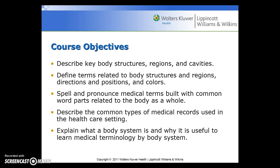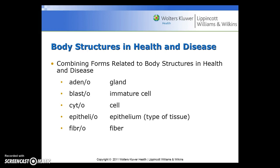This chapter's course objectives are to describe the key body structures, its regions and cavities; to define terms related to body structures, regions, directions, positions, and colors in medical terminology; to spell and pronounce medical terms built with common word parts related to the body as a whole; to describe the common types of medical records used in healthcare settings; and to explain what a body system is and why it's useful to learn medical terminology by body systems.